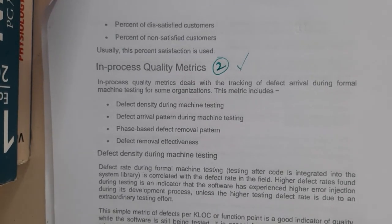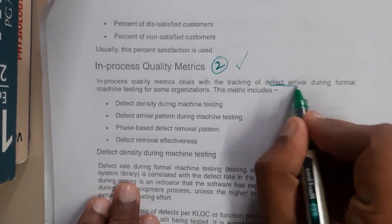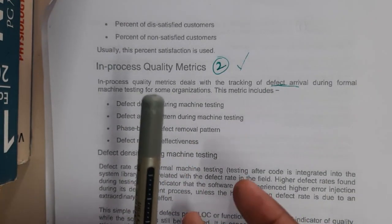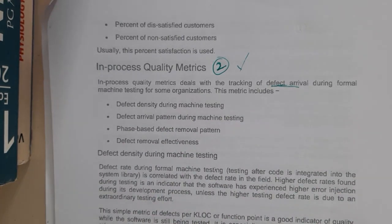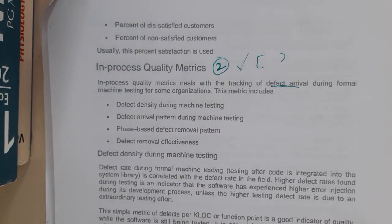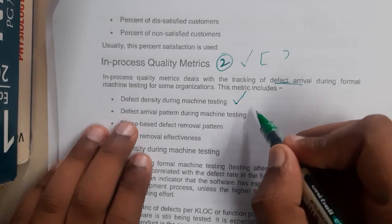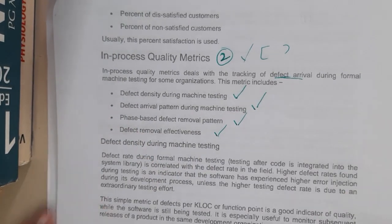Welcome back. In this lecture, let us continue the previous lecture on software quality metrics. The second type is in-process quality metrics, which deals with tracking of defects. When you design a product, there is a high chance you can identify defects easily. These defects are formed into matrices so they are clear to the developers. These matrices are used mainly for software application defects. They are divided into four types: defect density during machine testing, defect arrival pattern during machine testing, phase-based defect removal pattern, and defect removal effectiveness.